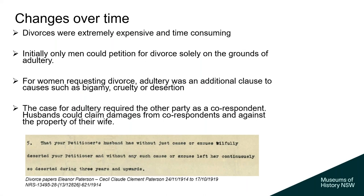Regarding changes over time: initially, only men could petition for divorce solely on the grounds of adultery. Divorces were extremely expensive and time-consuming, and out of reach for many couples, who may have chosen to separate rather than pursue the legal divorce procedure. For women, adultery was an additional clause to bigamy, cruelty, or desertion — another element they needed to provide proof of. A co-respondent was required in cases of adultery, and husbands could claim damages from co-respondents and against the property of their wife.